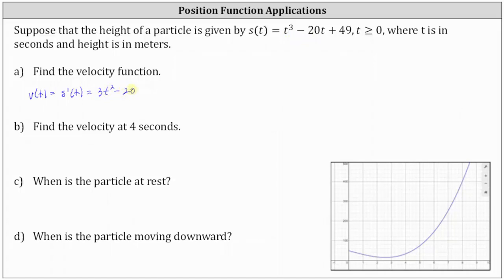For part b, we're asked to find the velocity at four seconds, which would be v of four. If you look at the graph, notice that at four seconds the tangent line would have a positive slope, which does represent the velocity function value. The velocity is positive here because the particle is moving upward. V of four is equal to three times the square of four minus 20. The square of four is 16, three times 16 is 48, and 48 minus 20 is 28. So the velocity at four seconds is 28 meters per second.